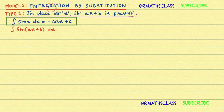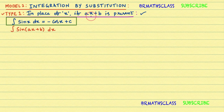Model 2: integration by substitution. In this model, four types are there. This is the first type. In place of x, if ax plus b is present — that is what we mean exactly. Till now we learned 16 formulas. In all 16 formulas, in place of x, if ax plus b is present, then how do we integrate?